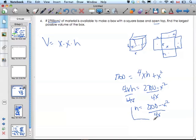And I know that h is 2,700 minus x squared over 4x. I'm going to take this equation, plug it in to there. That's the key.